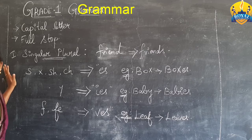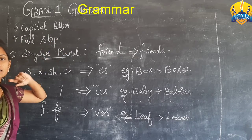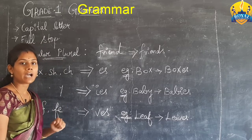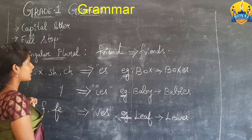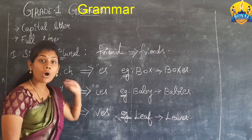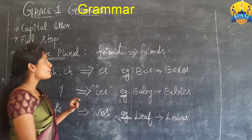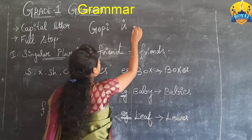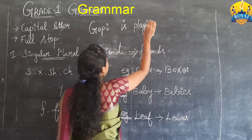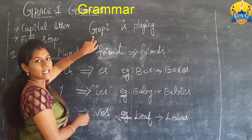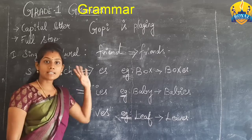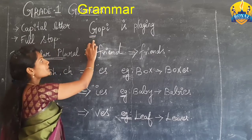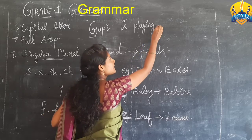First in the grammar part, we are going to see where we have to use the capital letter and how the sentence is completed. The capital letter always comes as the first letter of the sentence. For example, 'Gopi is playing' — in this sentence, the first letter G should be capital. The sentence should always start with a capital letter.